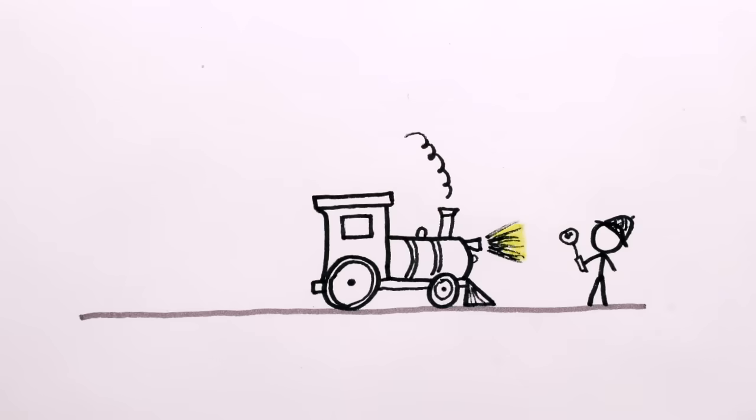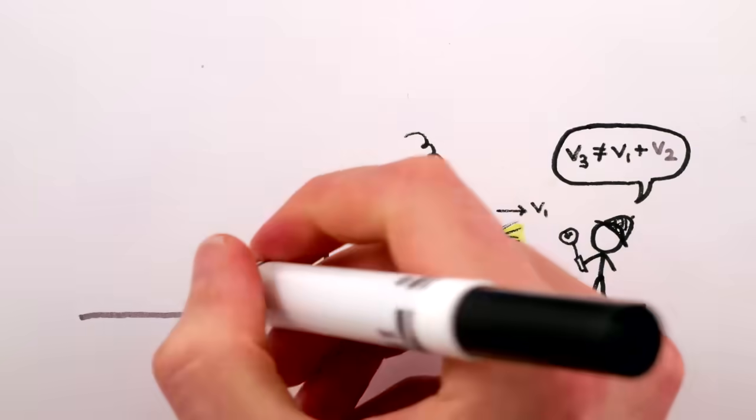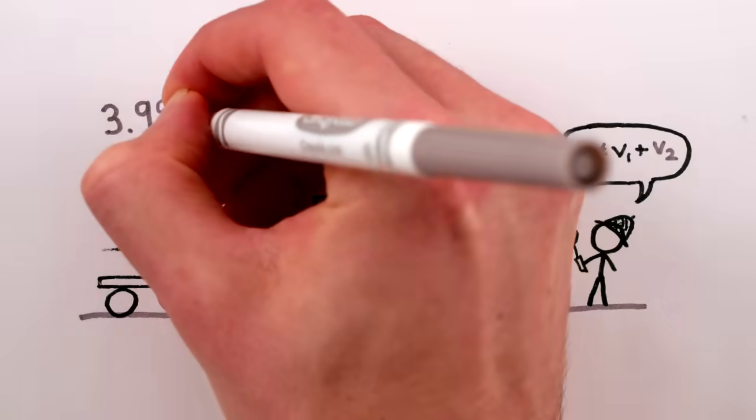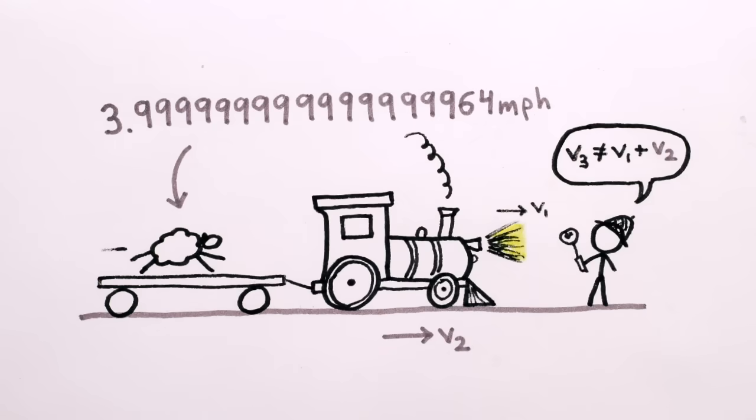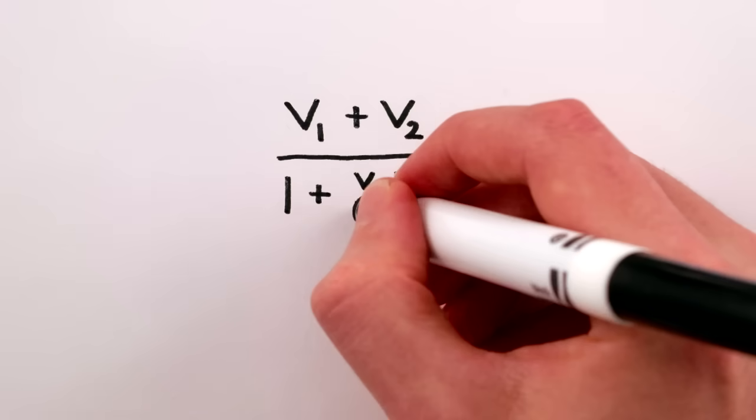Experiments in special relativity have confirmed that velocities don't simply add together, and so the sheep will in fact be moving very, very ever so slightly slower than 4 miles per hour relative to the ground. And the formula that correctly predicts this deviation from just adding the velocities is V1 plus V2 divided by 1 plus V1 times V2 over C squared.